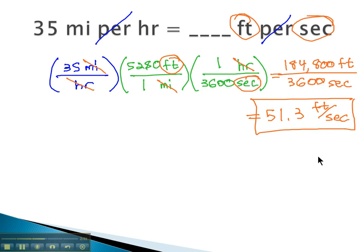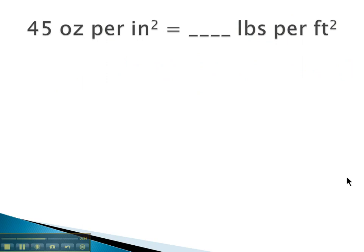Let's try another example. Here, we have 45 ounces per square inch. Again, the per is the fraction bar. 45 ounces per or over a square inch. Converting one unit at a time, then, we're going for pounds per square foot. So first, working on the numerator.